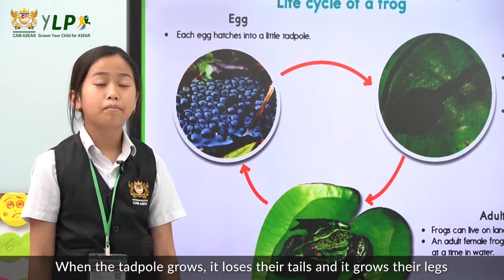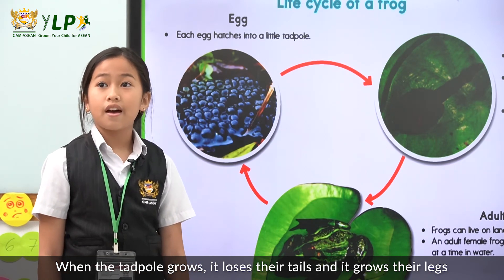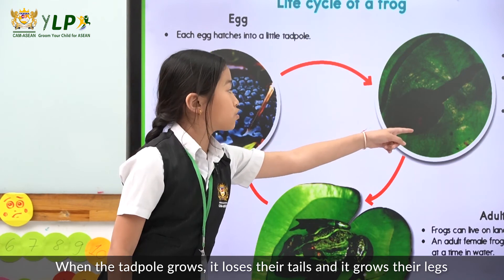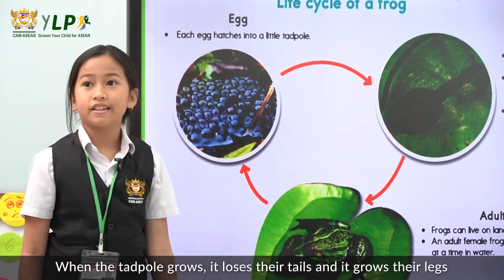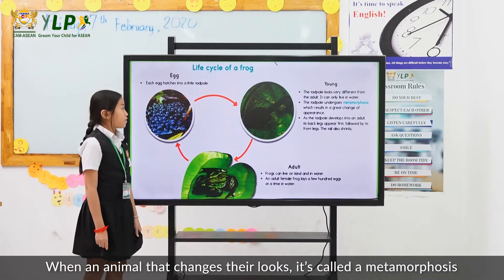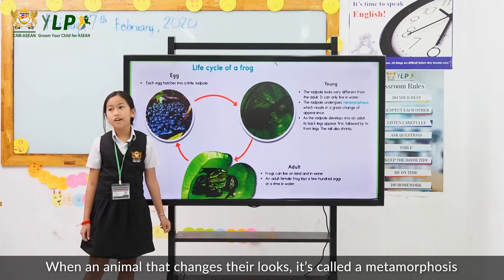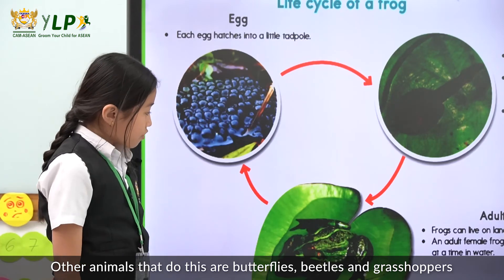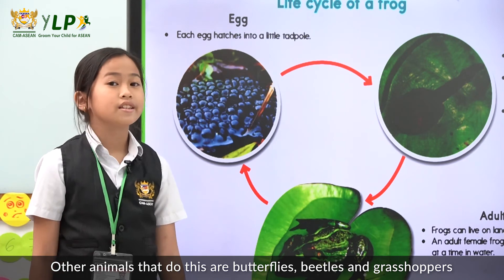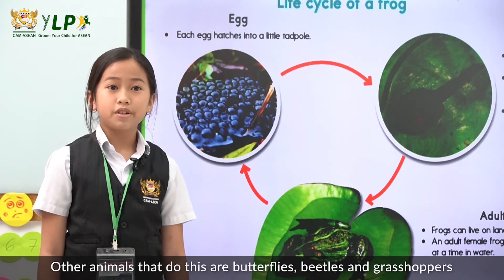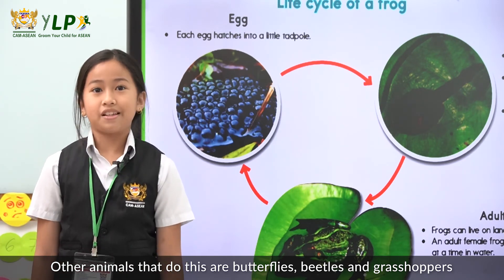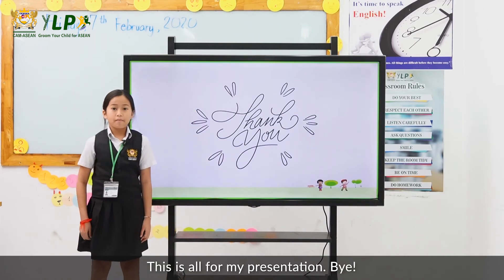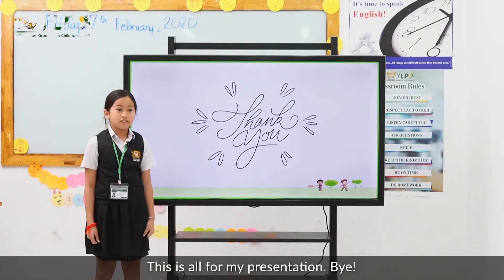When the tadpoles grow, they lose their tails and grow legs. When an animal changes its look, it's called metamorphosis. Other animals that do this are butterflies, beetles, and grasshoppers. This is all for my presentation. Bye.